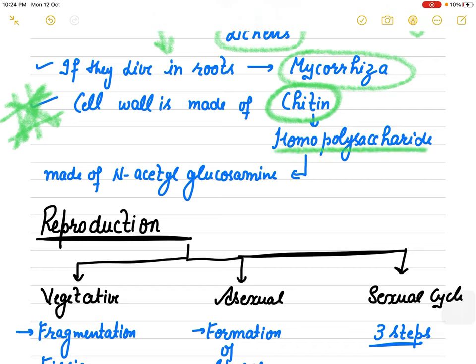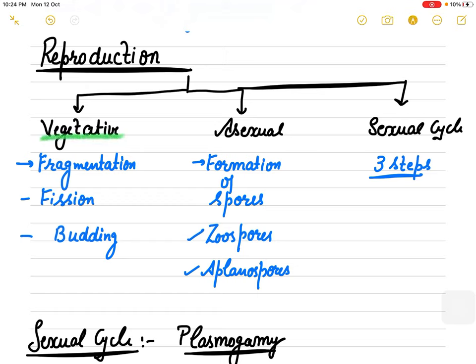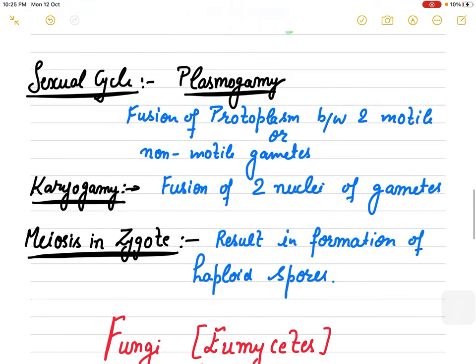Reproduction occurs through vegetative, asexual, and sexual cycles. I'm not going to talk about detailed process of reproduction here because we will discuss that in individual groups. Fragmentation, fission, budding are the vegetative modes and formation of spores, zoospores, or aplanospores are asexual types. Sexual mode of reproduction is in three ways: plasmogamy means fusion of protoplasm between motile and non-motile gametes, karyogamy is fusion of two nuclei of gametes, and zygote divides by meiosis leading to formation of haploid spores which further grow on favorable conditions and give rise to another fungi.